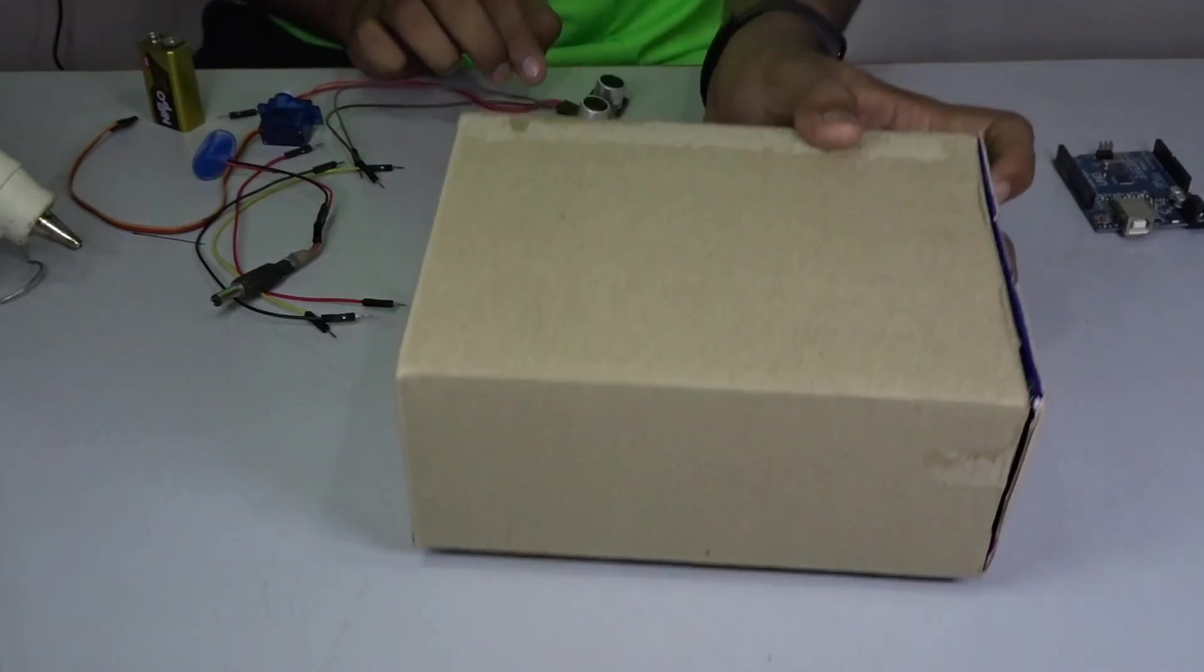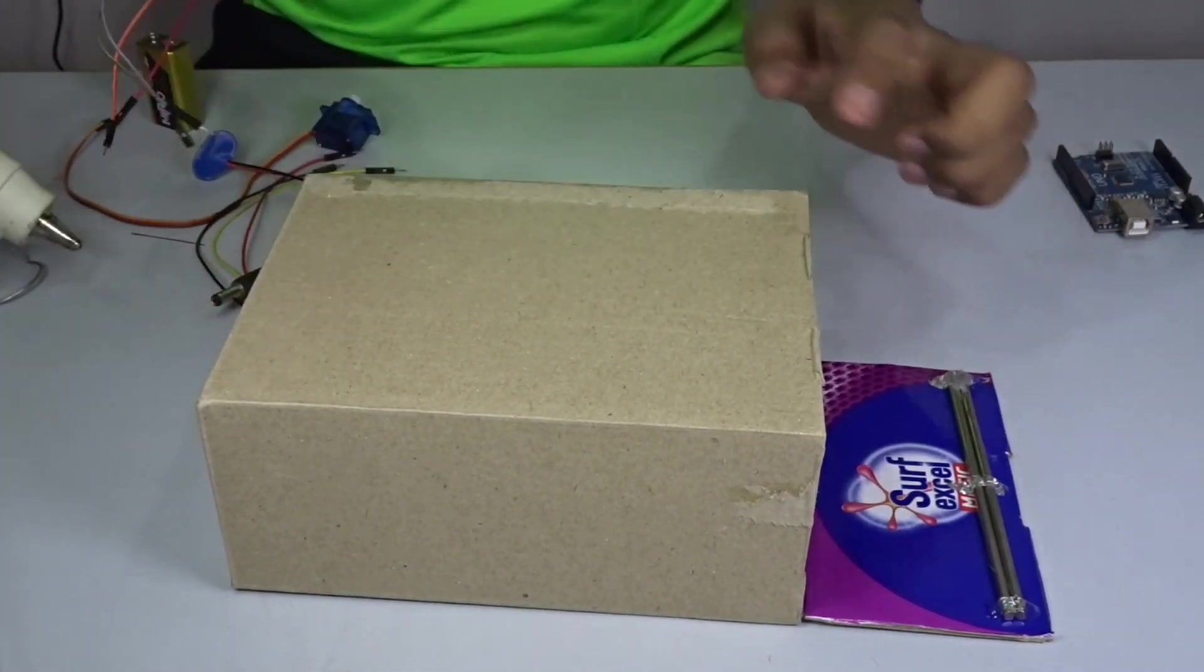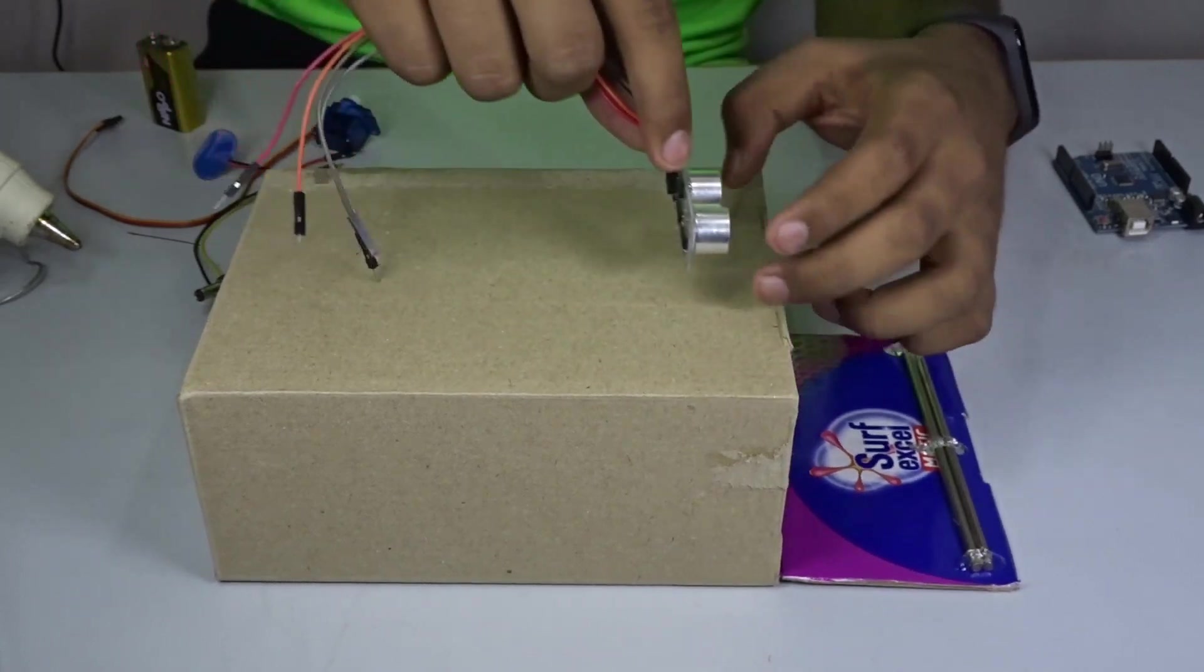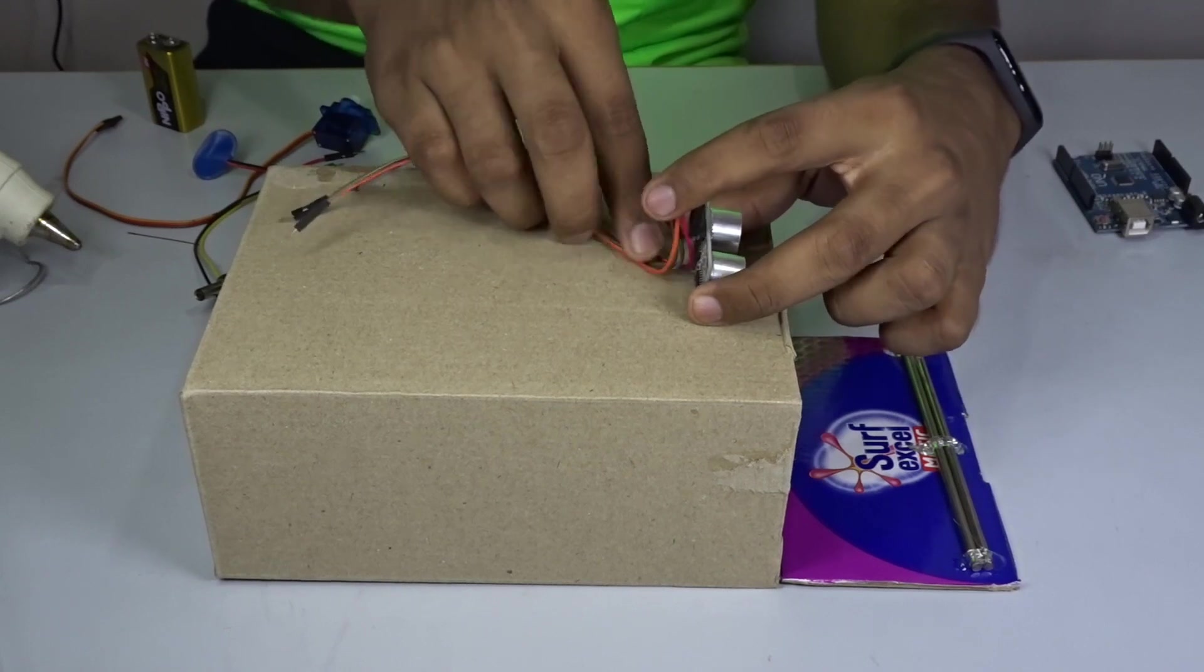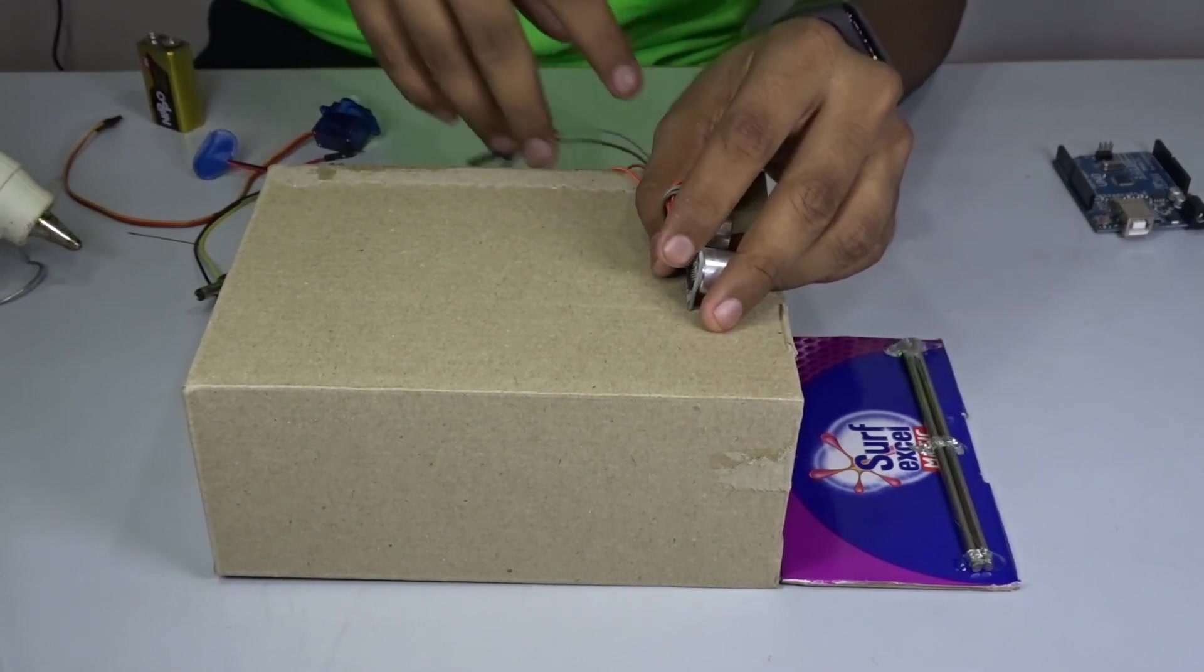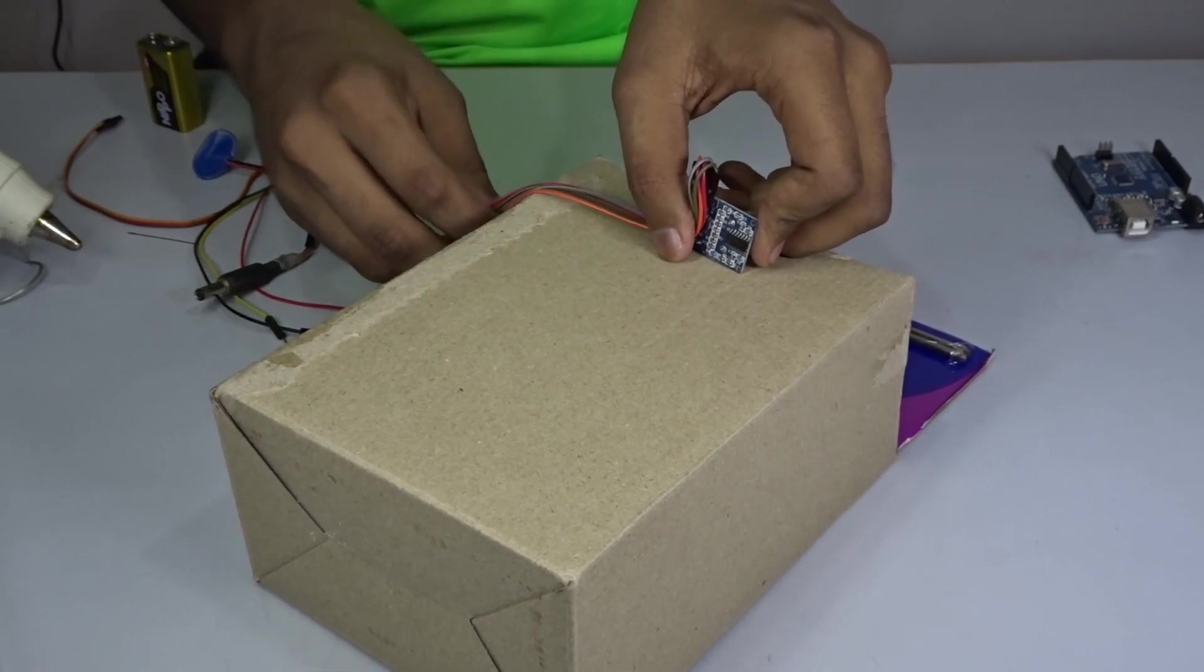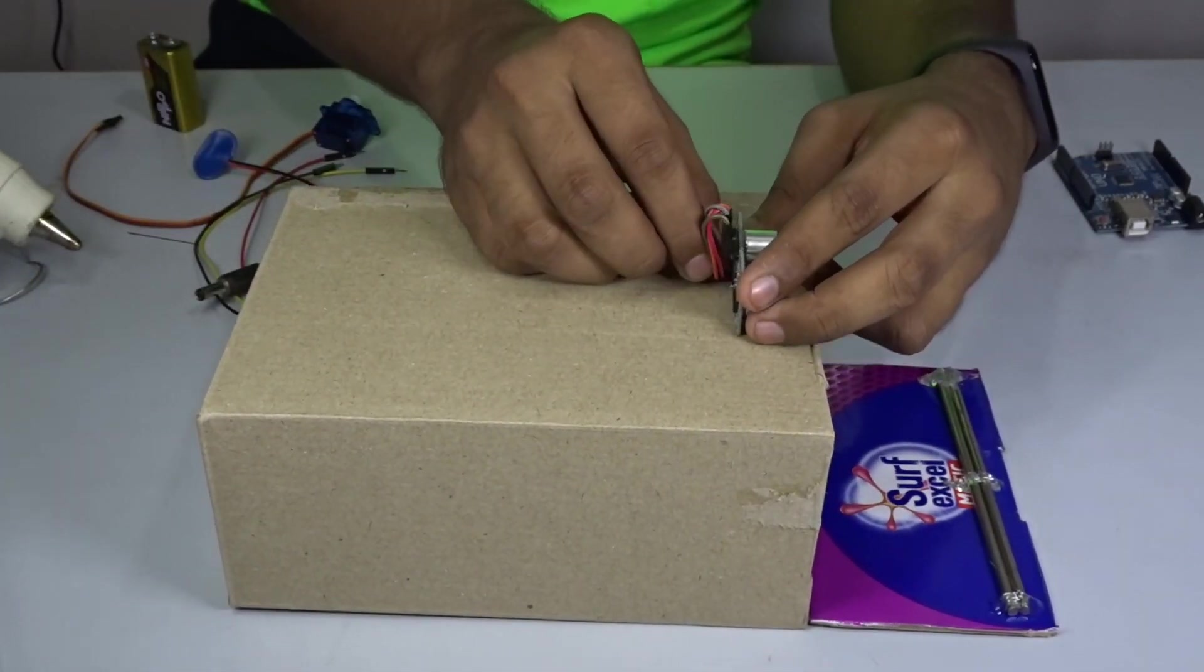So first of all what we need to do is mount the ultrasonic sensor onto the box right here. As you can see these wires come out. So what you can do is hold them like this and then just put some hot glue in there. Just make sure that the wires go around the box so that it can be connected to the Arduino. So just hot glue the sensor to the board.